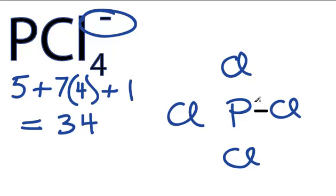Let's start by connecting each of the chlorines to the phosphorus, the chemical bond, and each of these is 2 valence electrons. So we've used 8 valence electrons so far.